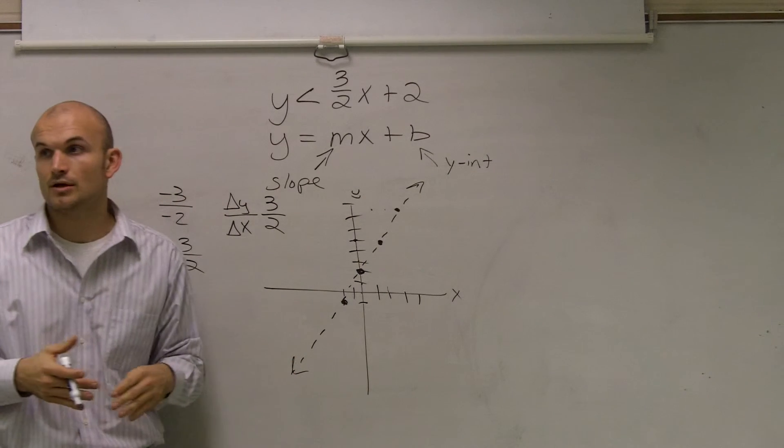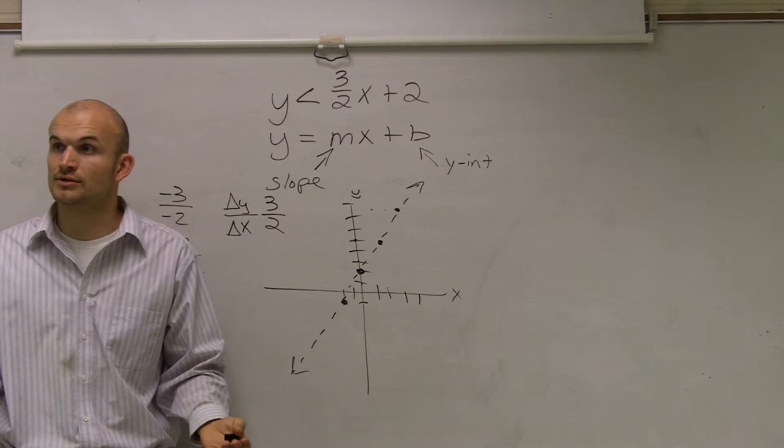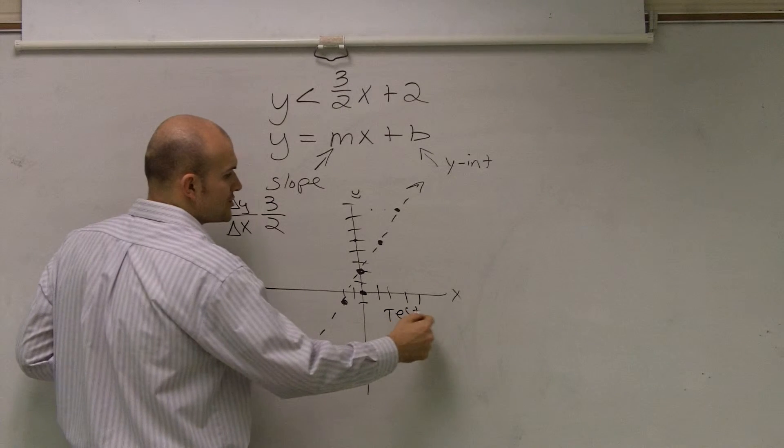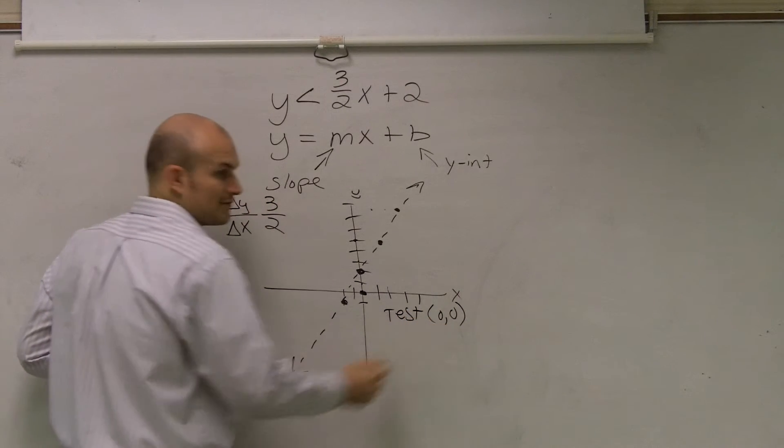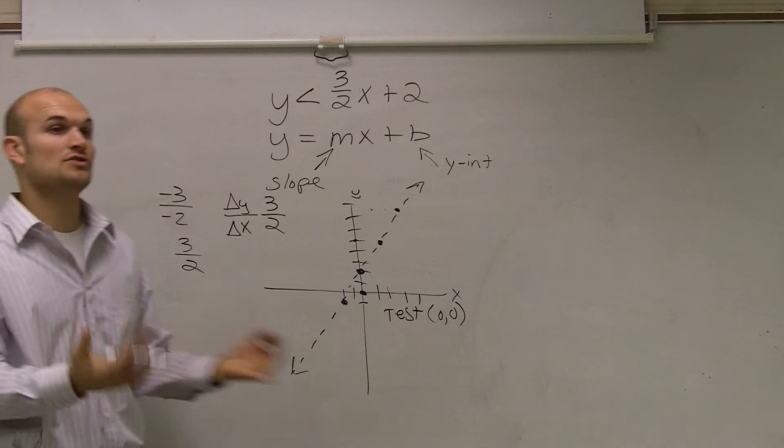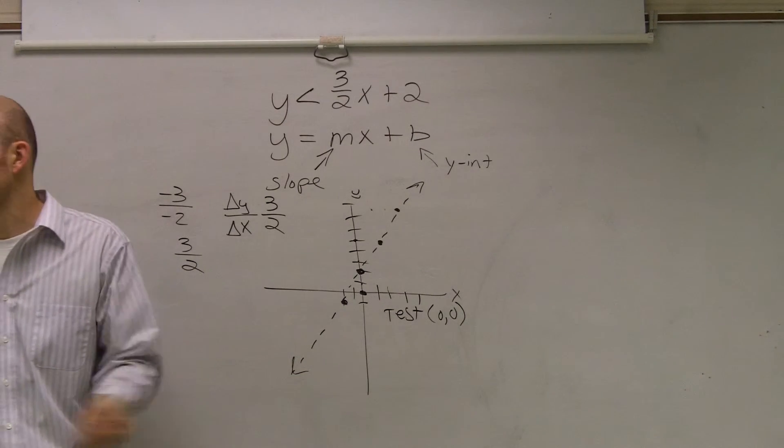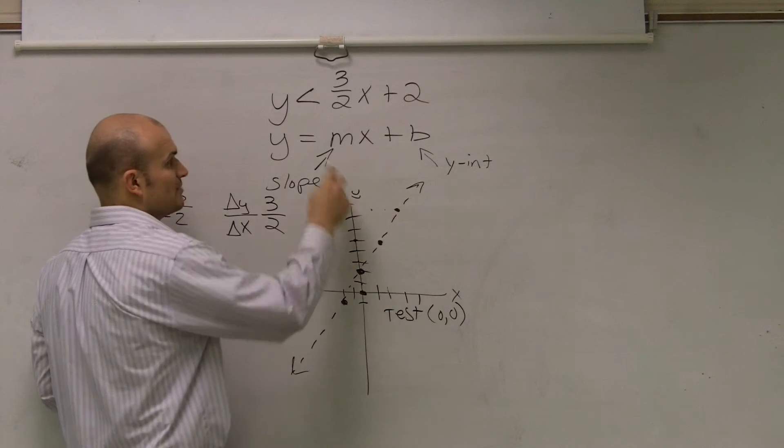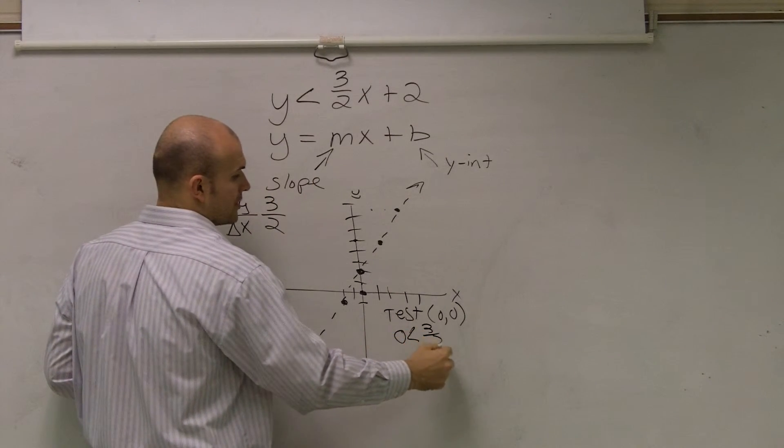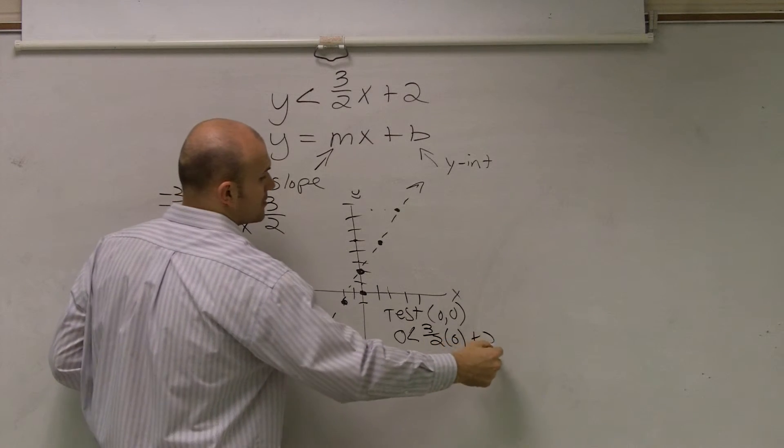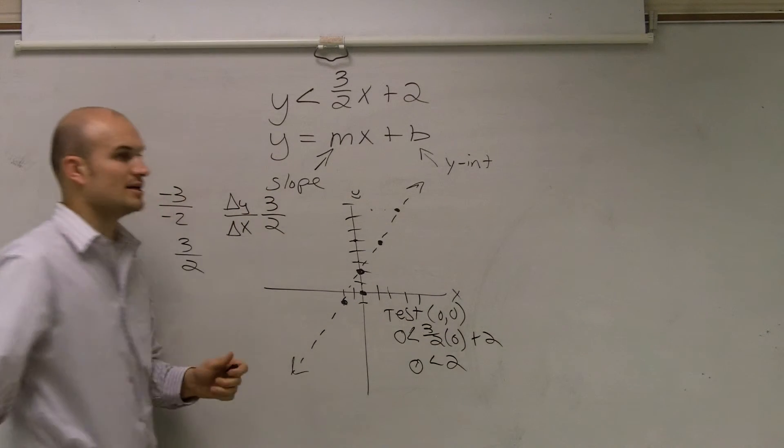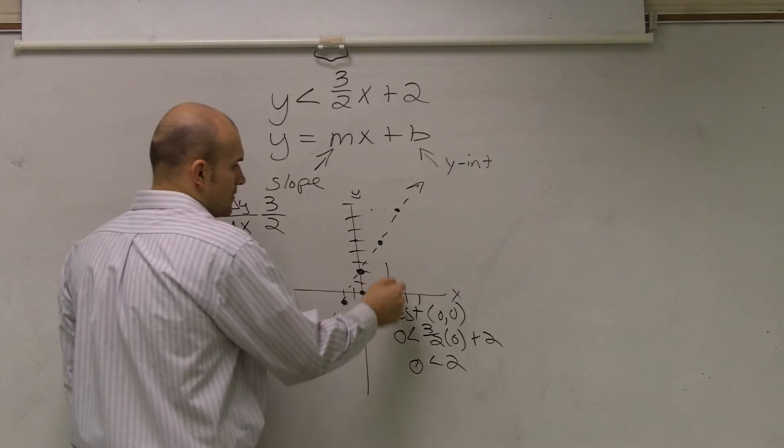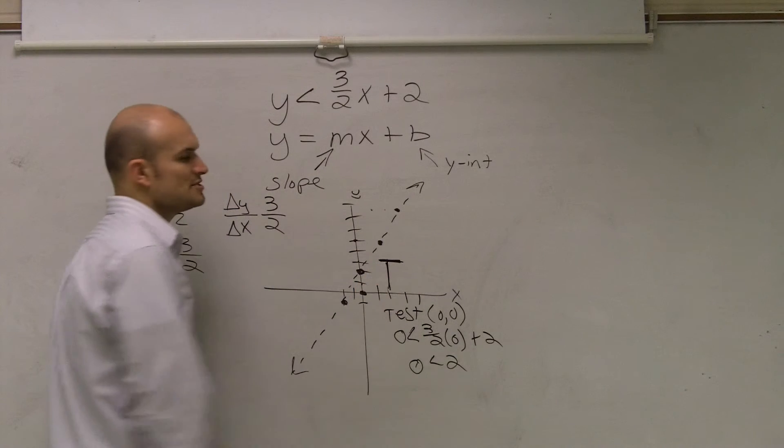So now we need to determine, where do we shade? What points are a part of our solution? So we always like to pick 0, 0. And we don't want to pick 0, 0 when our graph goes through 0, 0. And if it goes through 0, 0, just pick another point. We usually like to have x be 0, and then y can be whatever. So I just pick my test point. I have 0 is less than 3 halves times 0 plus 2. So I end up getting 0 is less than 2. Is that true or false? And that is true.